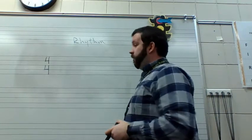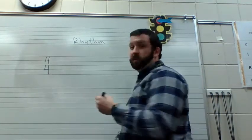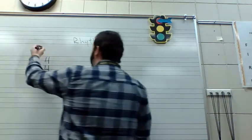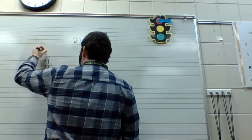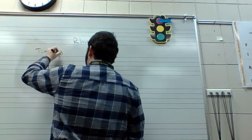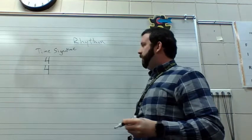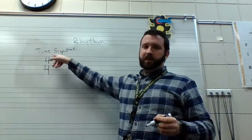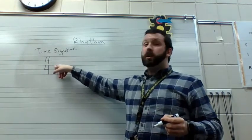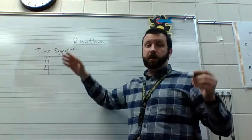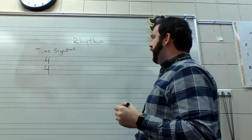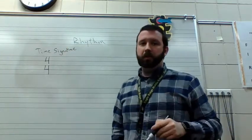At the beginning of our piece of music, of any piece of music, we're going to have this, which is called a time signature. Our time signature has two fours on top of each other, kind of like a fraction. We are learning what's called four-four time, and four-four time means that there's four counts in each measure.